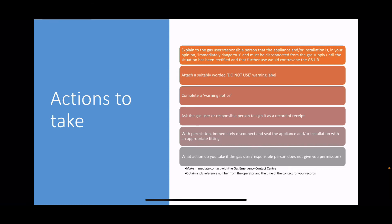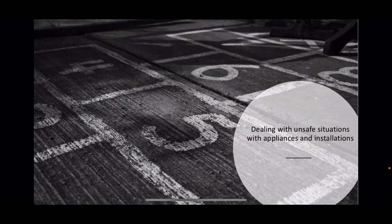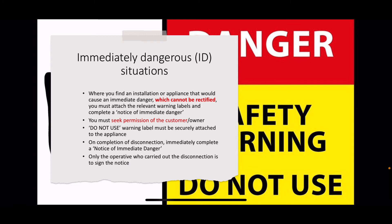An immediately dangerous situation is where you find an installation or appliance that would cause an immediate danger - it is dangerous now and cannot be rectified. Normally you'd fix it on the spot, but if it can't be rectified you must attach the relevant warning labels, complete a notice of immediate danger, and seek the customer's permission. The 'Do Not Use' warning label must be securely attached to the appliance, and on completion of disconnection immediately complete a notice of immediate danger. Only the operative who carried out the disconnection is to sign the notice.